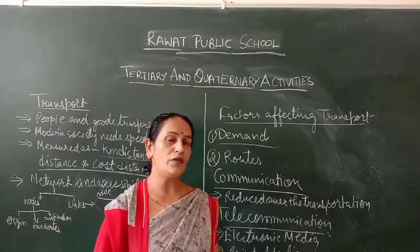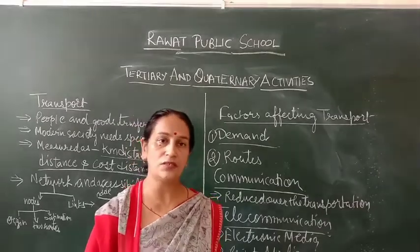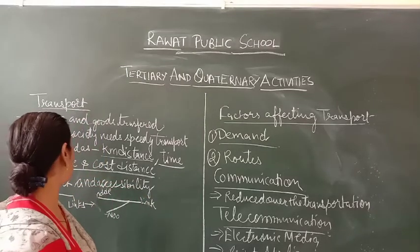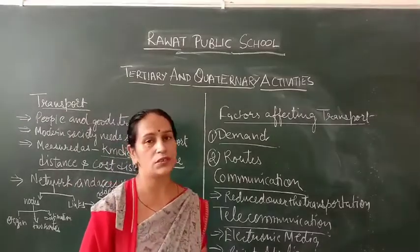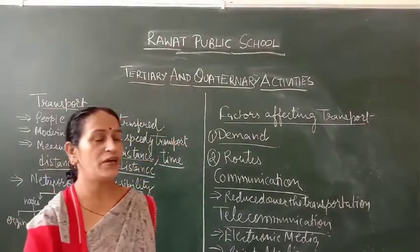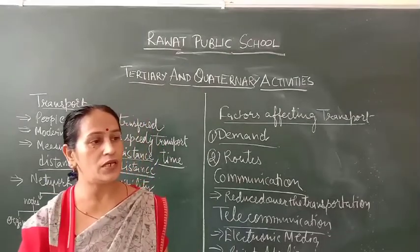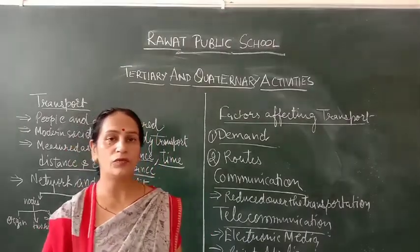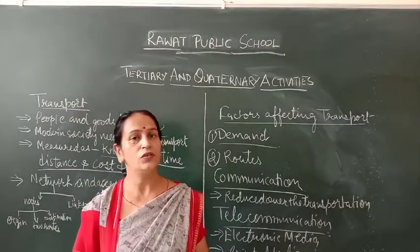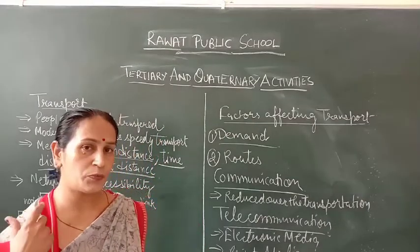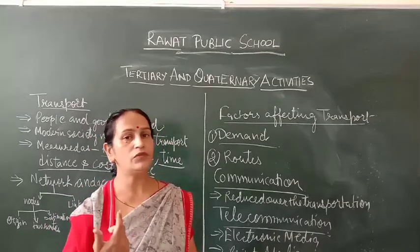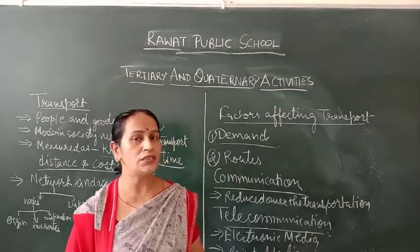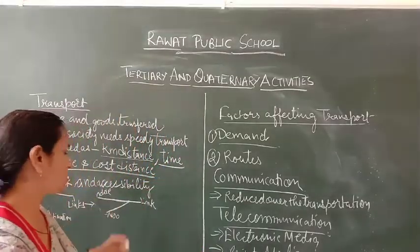Time distances refer to the time taken to travel — it could be two days, four days, or ten days. So we measure time distances accordingly. Cost distances refer to how much money is spent. For example, as compared to airways, landways and waterways are cheaper. Whether you are transporting materials or humans, you have to pay according to cost distance.